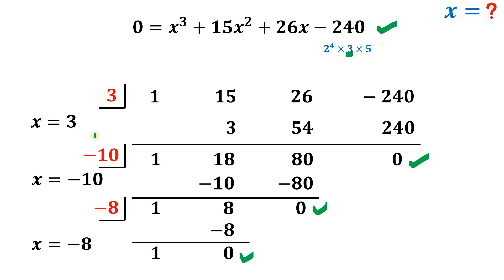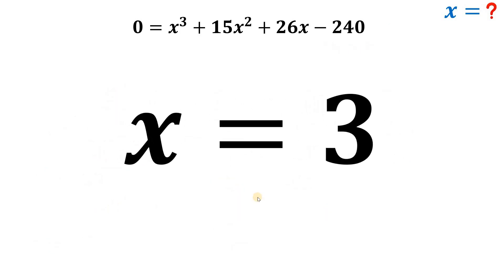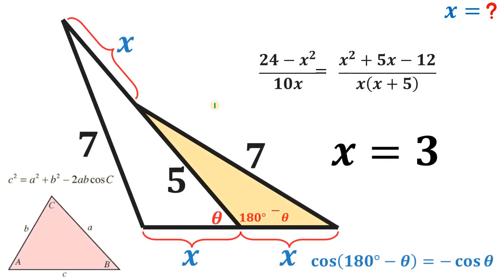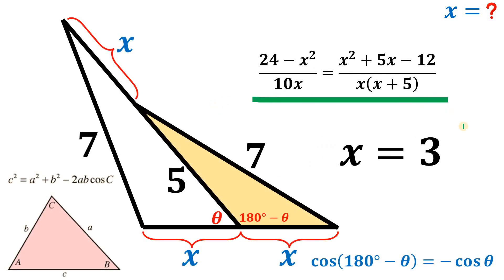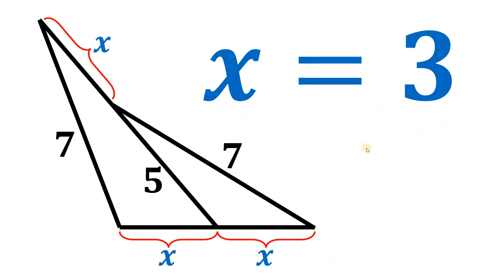Since this is a geometry problem, x represents a side length and cannot be negative. Therefore the only valid value is x = 3. Given this figure, the length of segment x is 3 units.